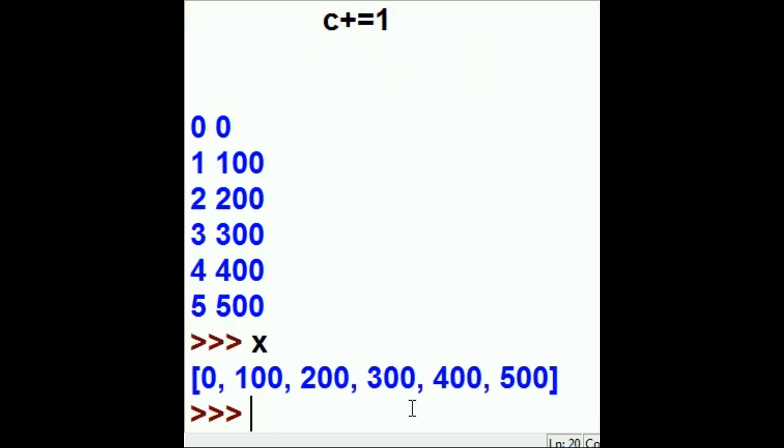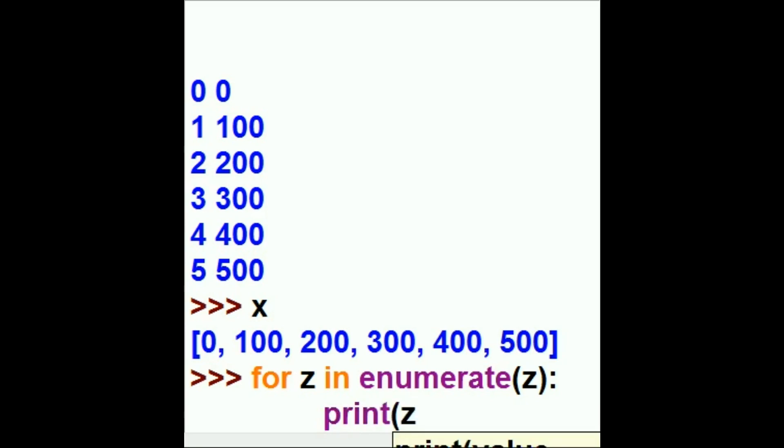So we know that X has 0 through 500. So I key in for Z in X. No, could you enumerate X for me? And then race through that thing.